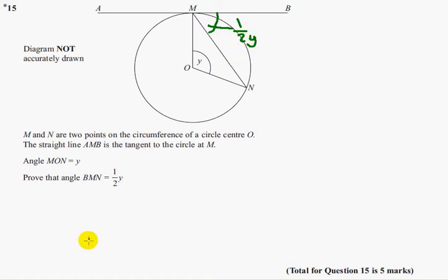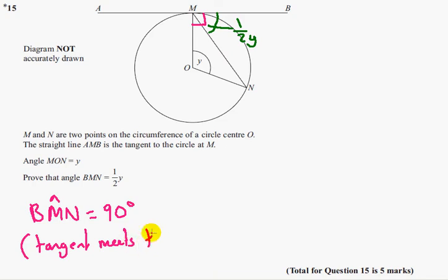So what do we know first of all? We know that angle BMN is 90 degrees. Because that's where the tangent meets the radius, and that's always 90 degrees.